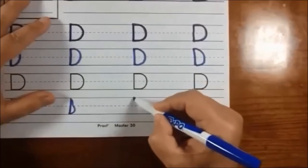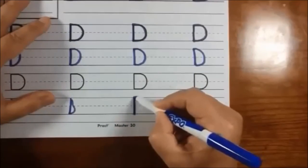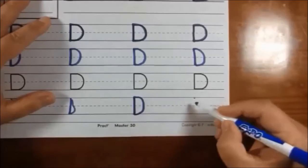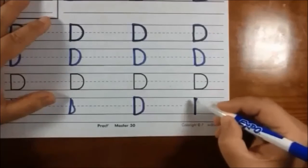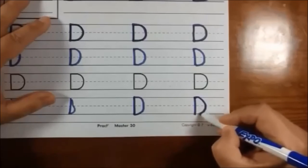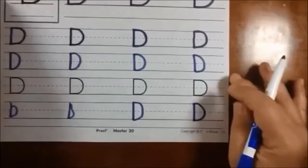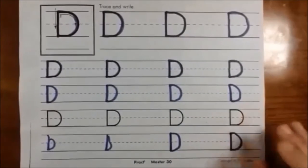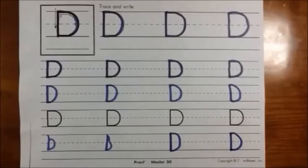So once again, it's down, up, and around. Or down, pick up your pencil, go to the top, and come around. Okay? That's how you make the capital letter, or uppercase, D.